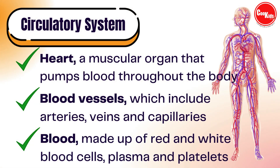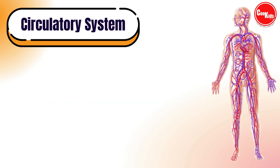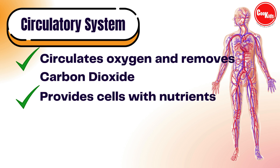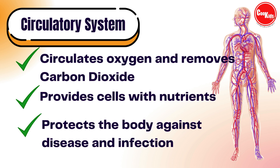Blood is essential to life. It circulates through the body and delivers essential substances such as oxygen and nutrients to the body's cells. Blood has three main components: red and white blood cells, plasma, and platelets. Its functions include transporting oxygen and nutrients to the lungs and tissues, circulating oxygen, removing carbon dioxide, providing nutrients to cells, and protecting the body against diseases and infection.